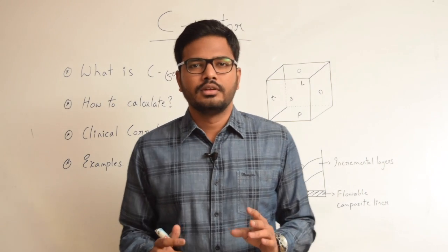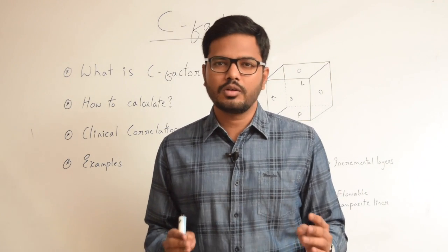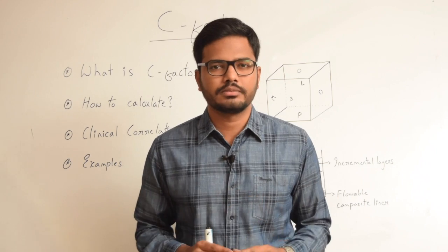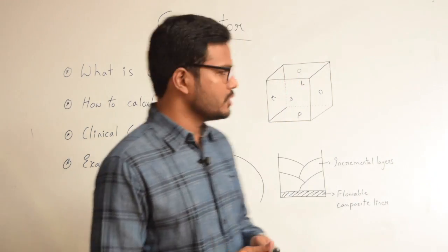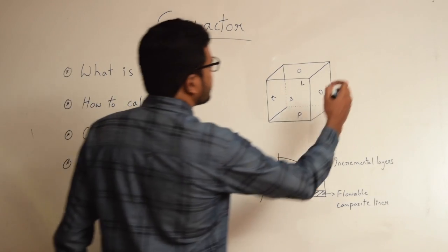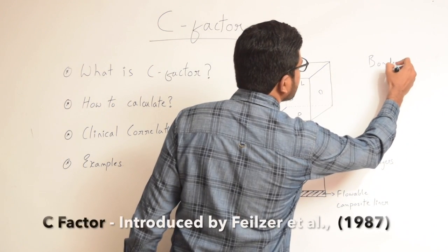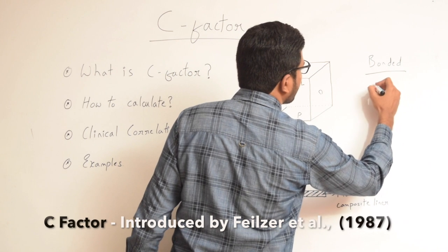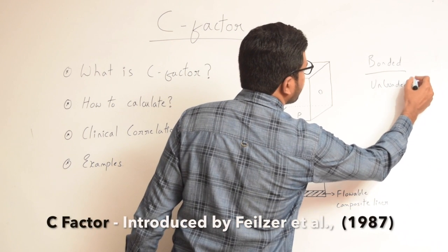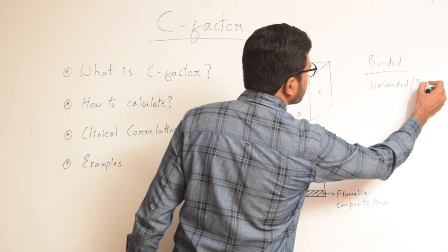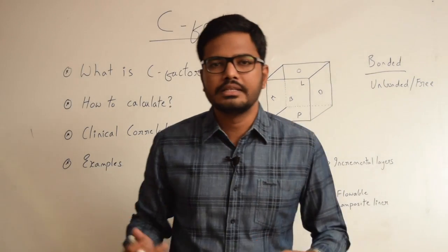So what is C-factor? C-factor is a tri-dimensional or three-dimensional configuration of a prepared cavity. And how do we calculate this C-factor? C-factor is usually calculated by dividing the number of bonded surfaces by the number of unbonded or free surfaces, thereby obtaining the ratio — the C-factor.